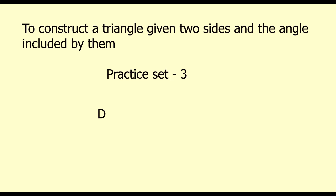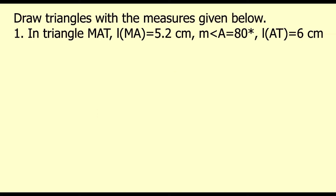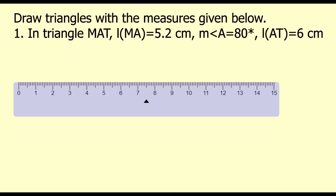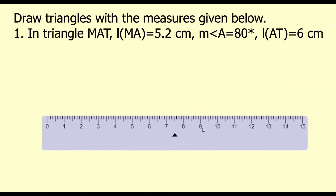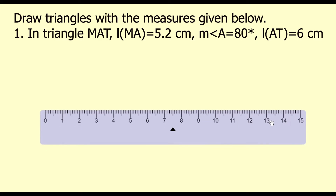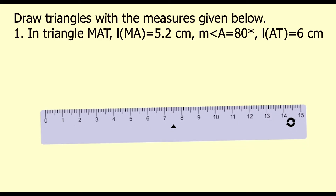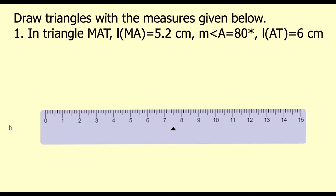Draw triangles with the measures given below. In triangle MAT, length MA = 5.2 centimeters, measure of angle A = 80 degrees, and length AT = 6 centimeters. So let's draw the segment MA of 5.2 centimeters.